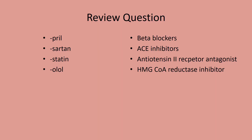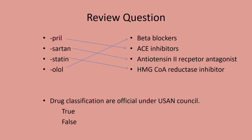Let's review. Which type of drugs end in -pril? Those are going to be the ACE inhibitors. How about sartan drugs? Sartan drugs are similar to ACE inhibitors — they act on angiotensin. Statin drugs end in -statin and are HMG-CoA reductase inhibitors — used for high cholesterol to block your body's ability to make it. Drugs ending in -olol are beta blockers. And a true-or-false: drug classifications are official under the USAN council — this is false. USAN is for generic names; drug classifications are always changing or being expanded.